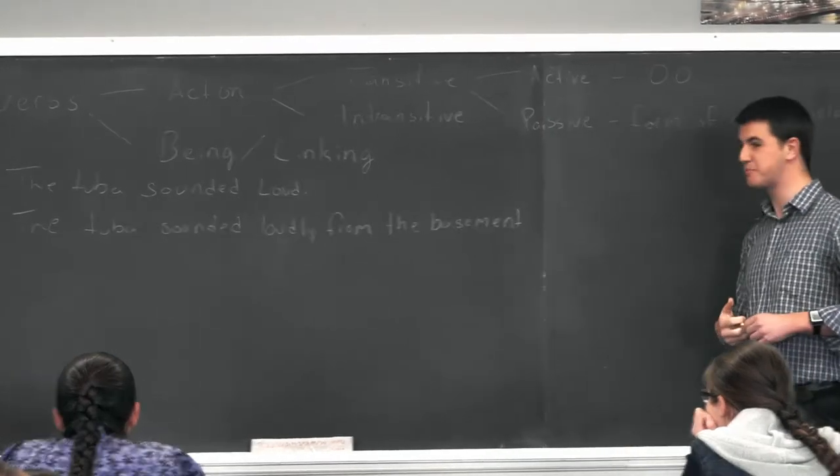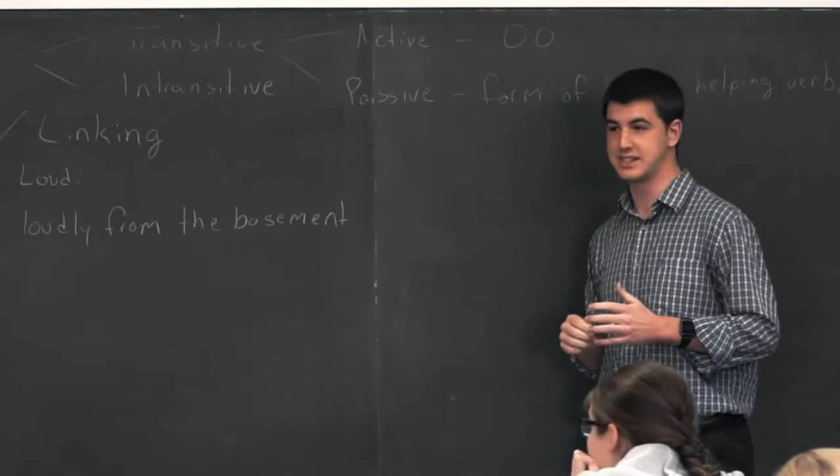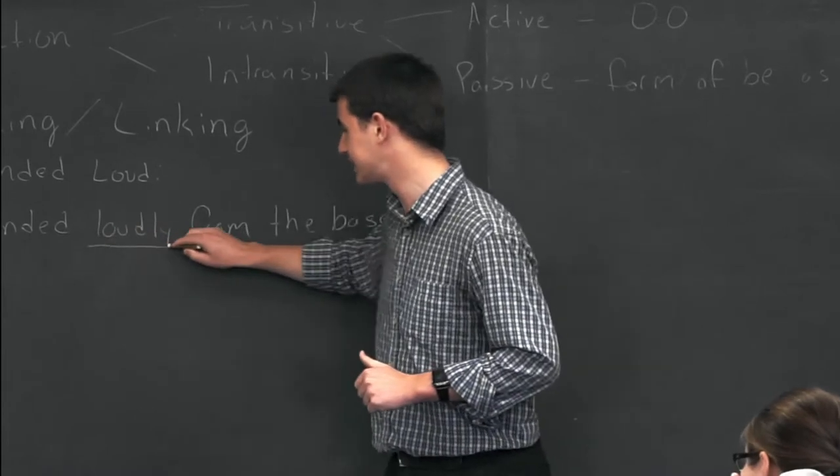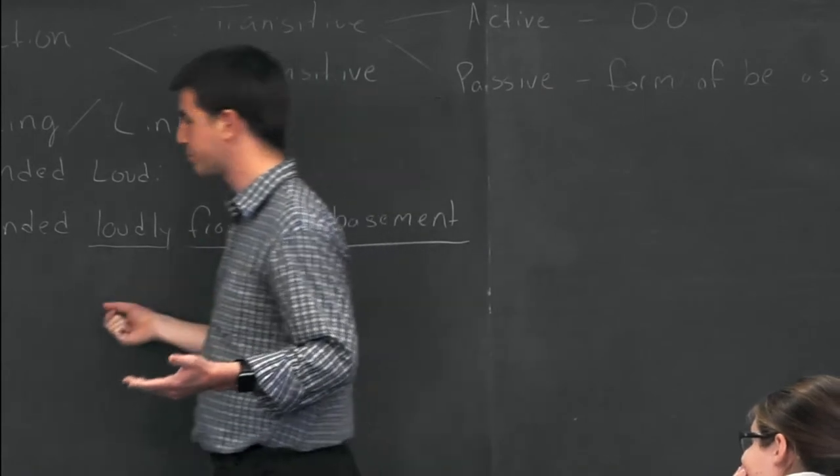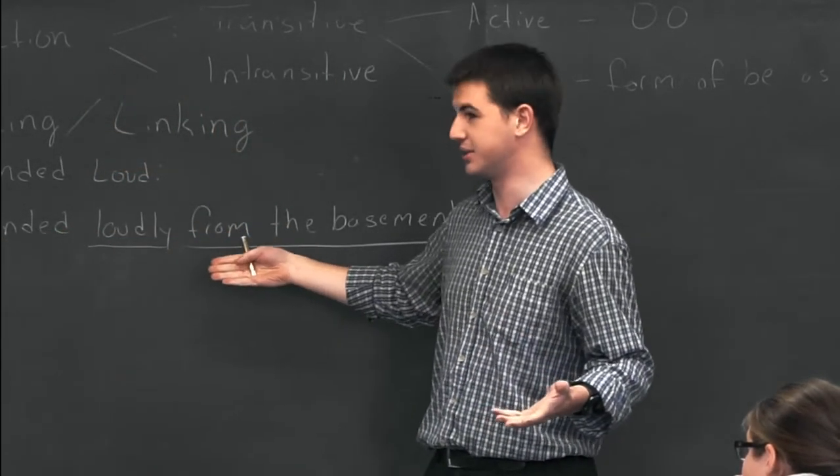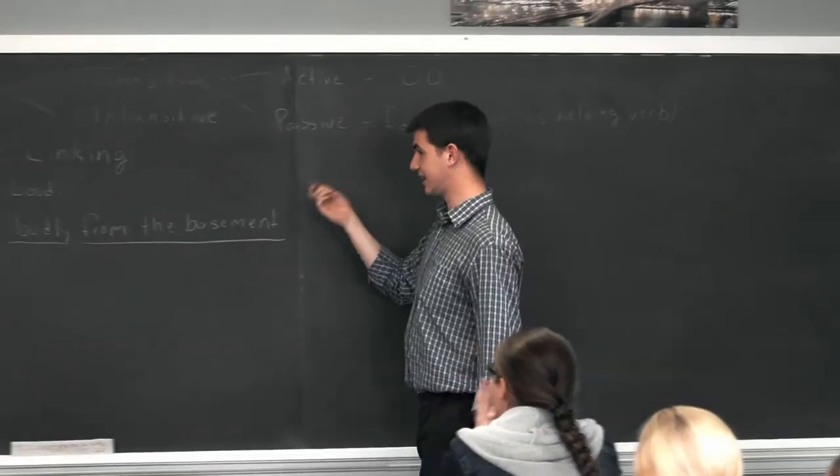'Tuba sounded loudly from the basement,' so it might be a little tricky. What kind of verb? This one is action. Why isn't it being? Okay, so what we have following the verb is loudly, which is an adverb, and from the basement, which is an adverb phrase. So there's no predicate adjective or predicate nominative. So the tuba is sounding, it's doing the action, so it's simply what? Transitive or intransitive? Intransitive.